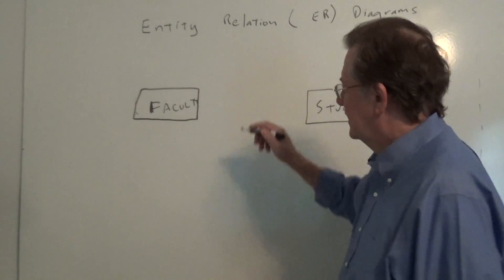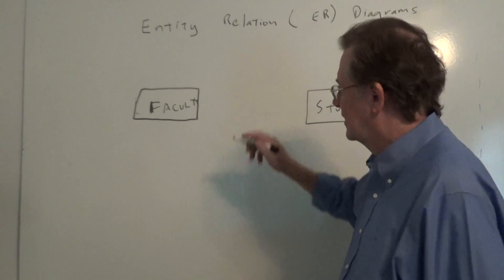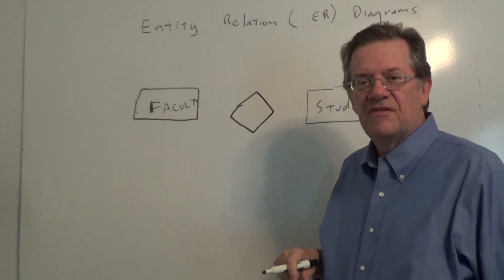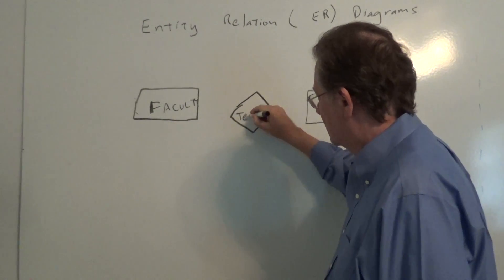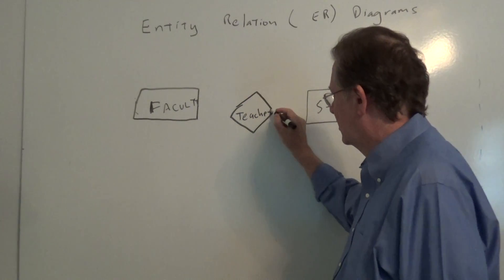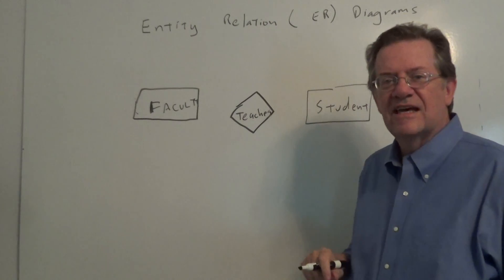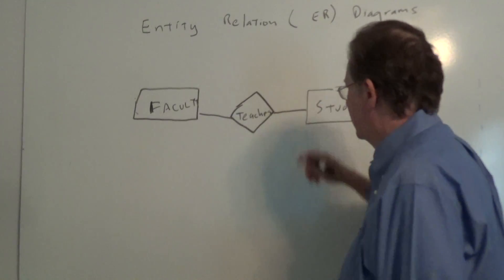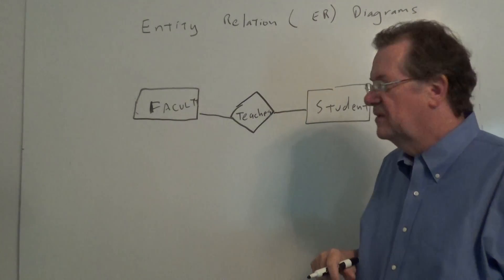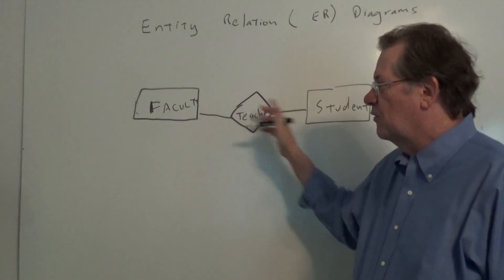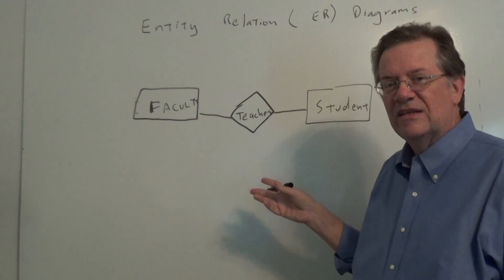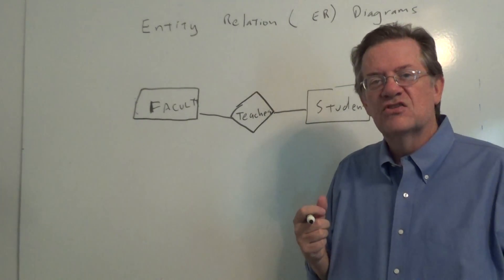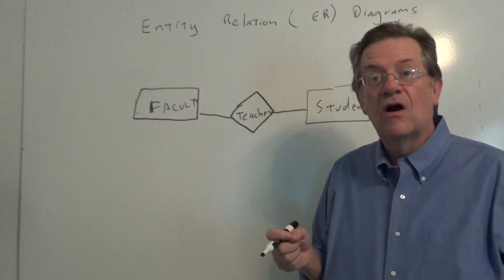The next thing we want to do is specify the relationship. And in this case, we use a diamond to specify the relationship. And we will put the word teaches. So the idea is that faculty teach student. Or in this case we draw a line to connect them. And we say faculty teaches student. So this is called the relationship. Now when we have a relationship between two entities, and we could actually have a relationship between three entities, we need to describe that relationship. And we use the word cardinality.